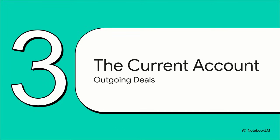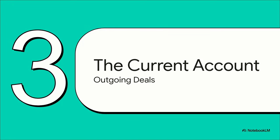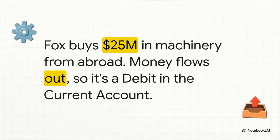Let's start with the current account and look at examples where money is flowing out — these are all debits. First, a local company, Fox, buys $25 million worth of machinery from another country. Fox is buying a physical good, which makes it an import, and to pay for it, money has to flow out of our country. That makes this a $25 million debit in the current account.